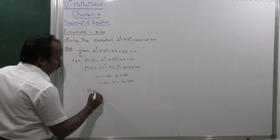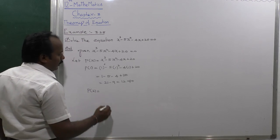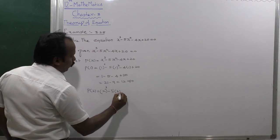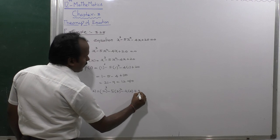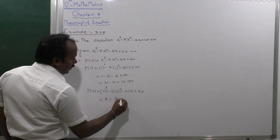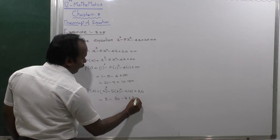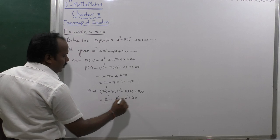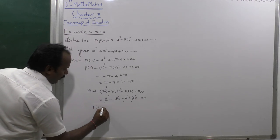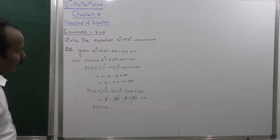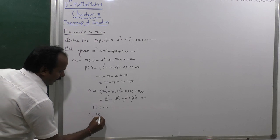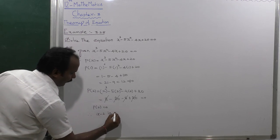Next, let us test x = 2. P(2) equals 2 cubed minus 5 times 2 squared minus 4 times 2 plus 20, which equals 8 minus 20 minus 8 plus 20, equals 0. Since P(2) = 0, x = 2 is a zero, so x minus 2 is a factor.